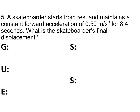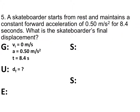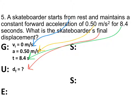Number five: a skateboarder starts from rest and maintains a constant forward acceleration of 0.50 meters per second squared for 8.4 seconds. What is the skateboarder's final displacement? You're looking for d. 'Starts from rest' means not moving — 'starts' tells you it's the initial condition, so vi = 0. The acceleration is 0.50 meters per second squared, and time is 8.4 seconds. Write down what you know and what you're looking for: vi, a, t — and we're looking for final displacement, d.